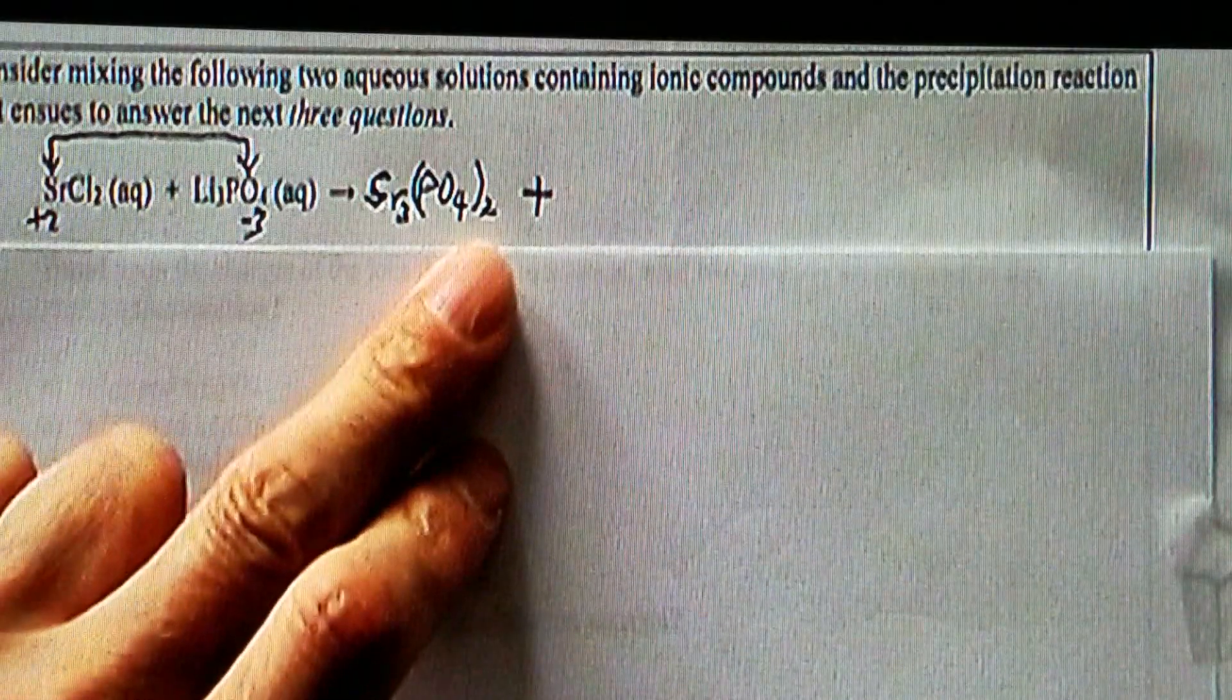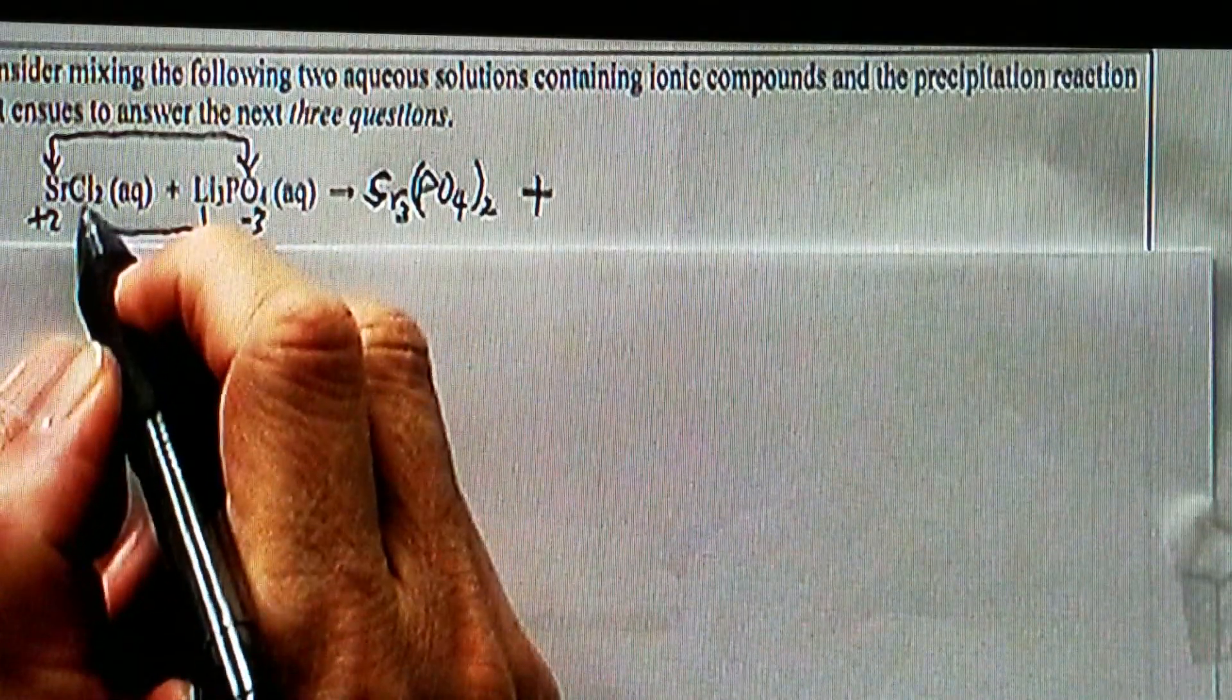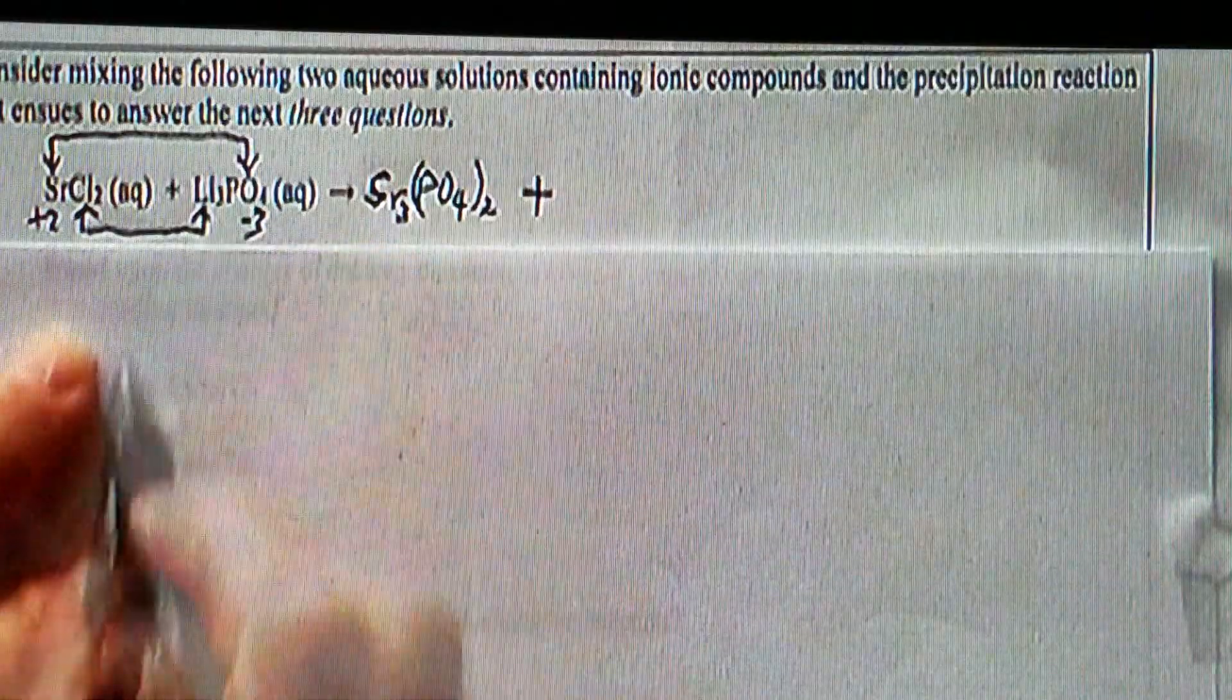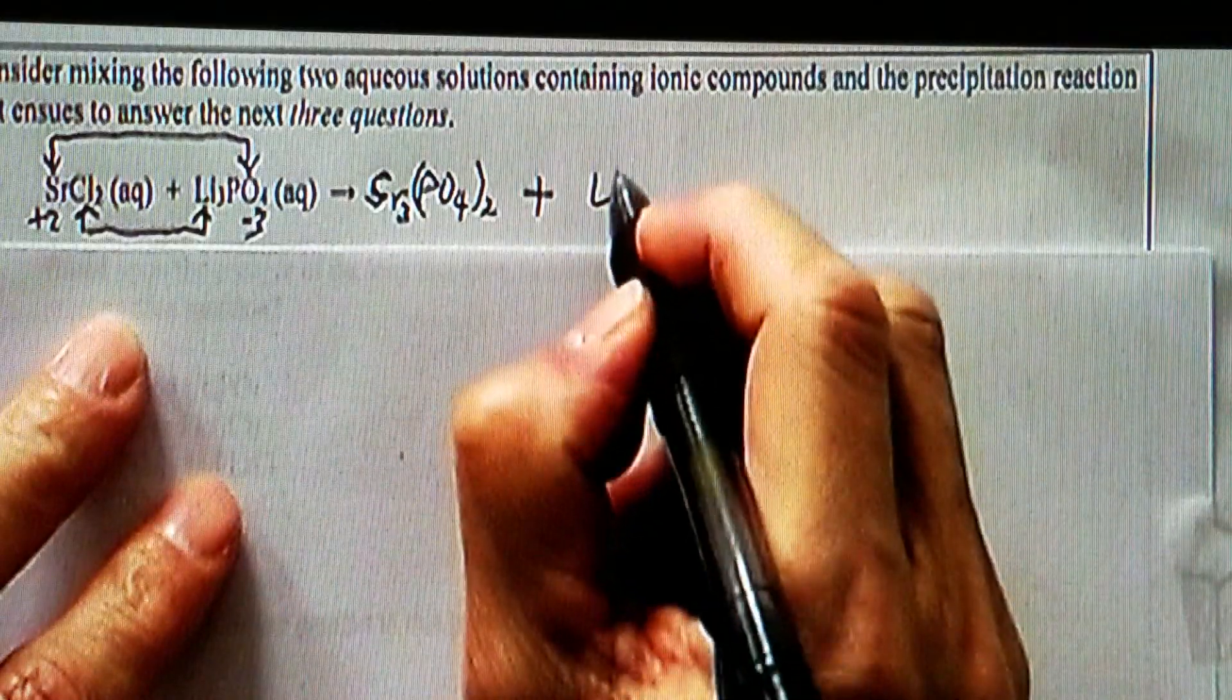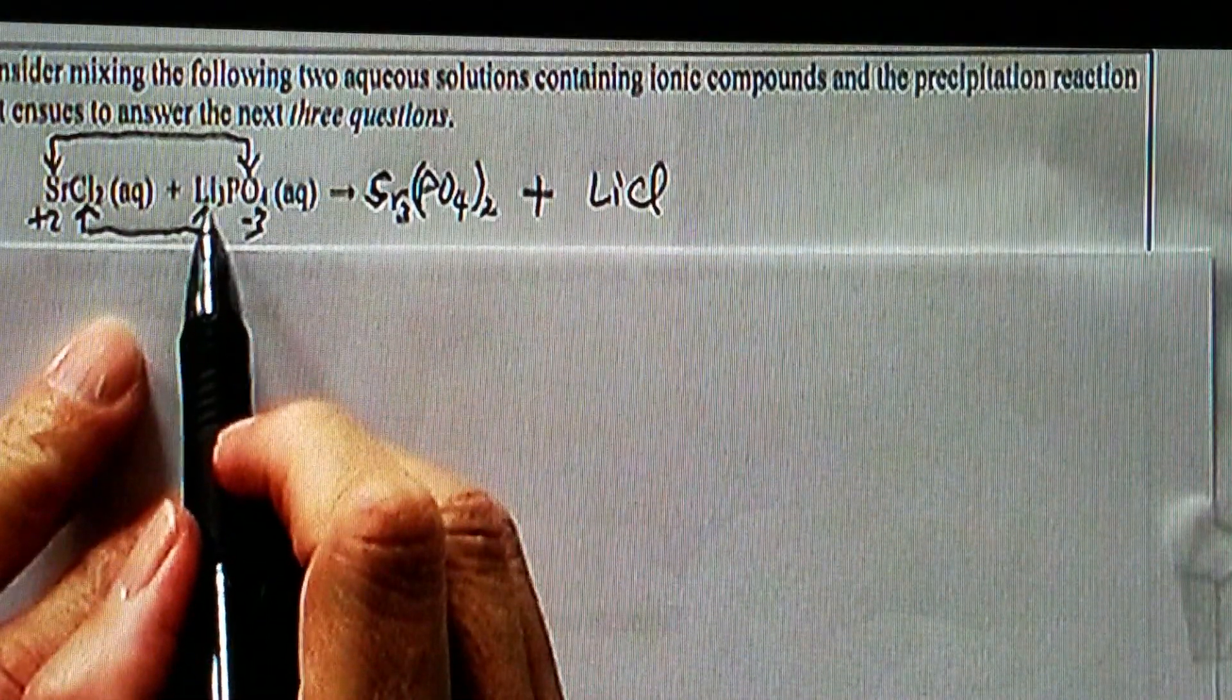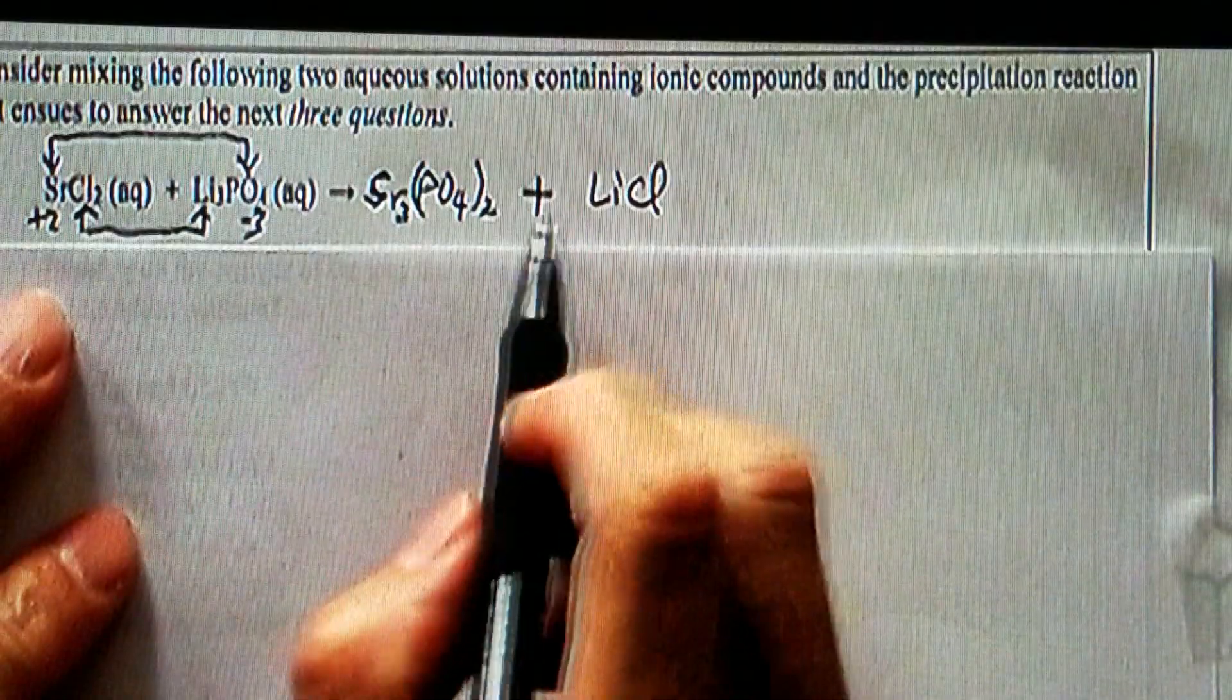Next, the cation of the second compound pairing with the anion of the first compound. So that would be lithium chloride. Lithium always carries positive one, chloride always carries negative one. Now we have to balance this equation.